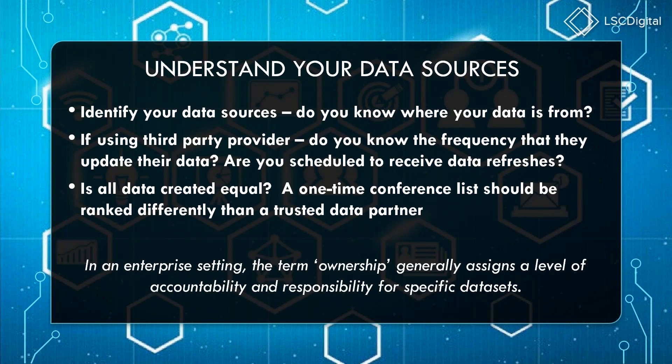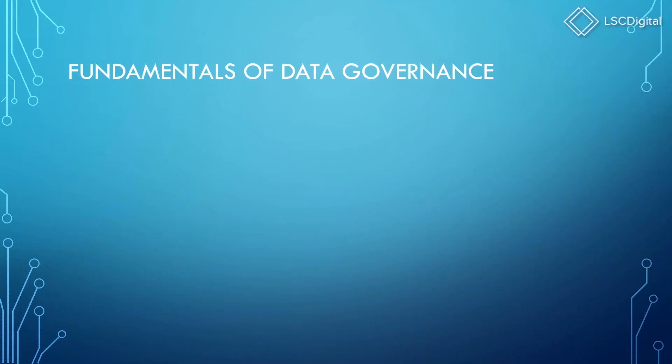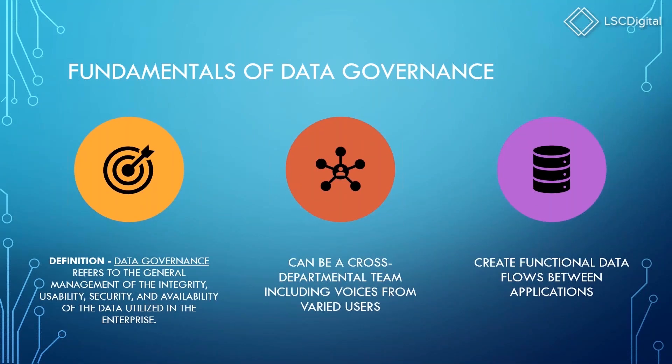In an enterprise setting, the term ownership generally assigns a level of accountability and responsibility for specific data sets. This brings us to data governance — the official definition refers to the general management of the integrity, usability, security, and availability of data used in the enterprise, which is a fancy way of saying data maintenance. This can be a cross-departmental team, but make sure there are strict guidelines so too many hands aren't in the pot, creating errors. It can also create functional data flows between applications, such as between your customer order system and your CRM system.